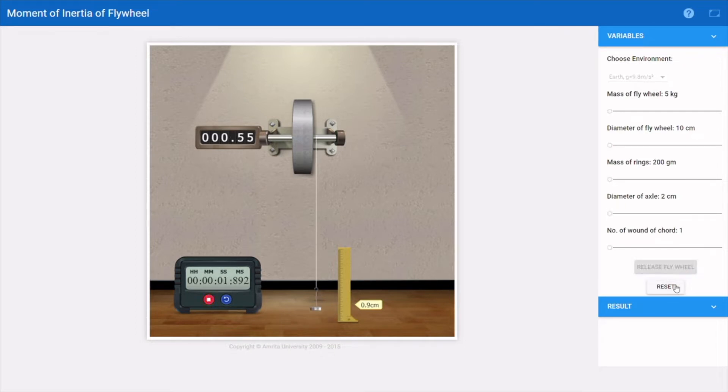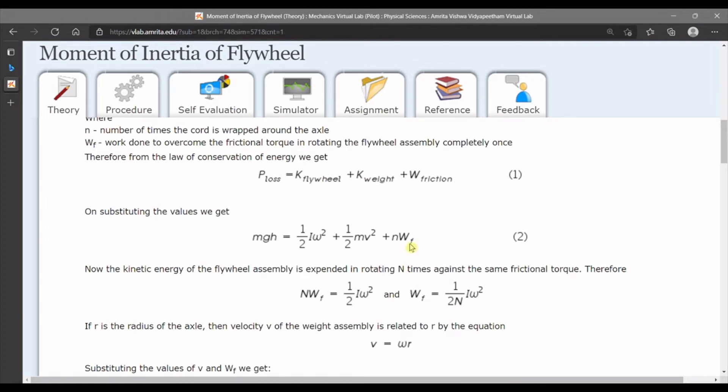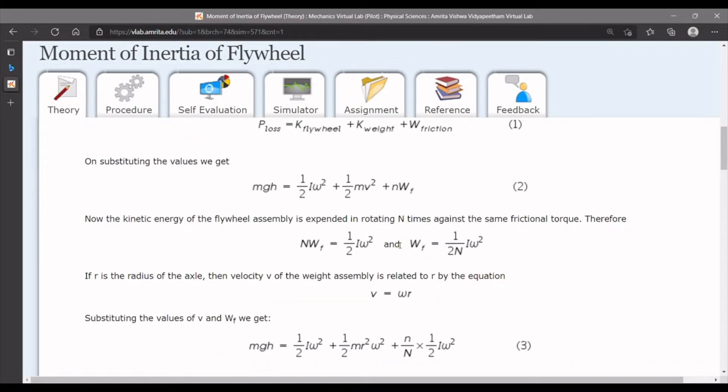As per our setup and energy conservation concept, if we release this weight hanger it goes down and its kinetic energy increases. So mgh energy of this weight hanger converts into its kinetic energy. Plus, simultaneously the flywheel rotates, so we have to add rotational energy which is half I omega square. We also have to add friction, so total work done by friction is n multiplied by work done by friction for one complete rotation of the flywheel.